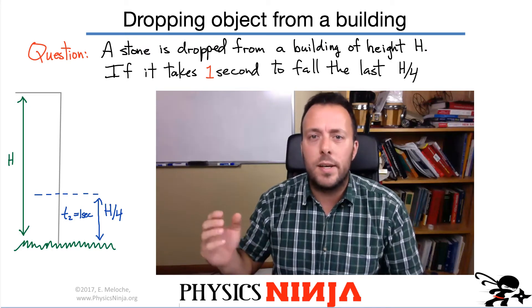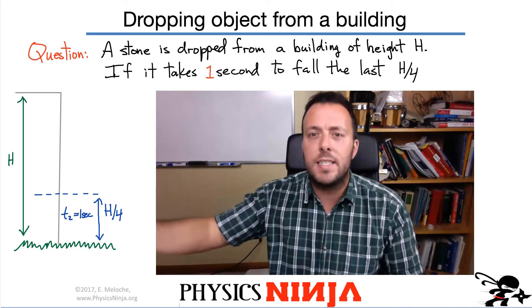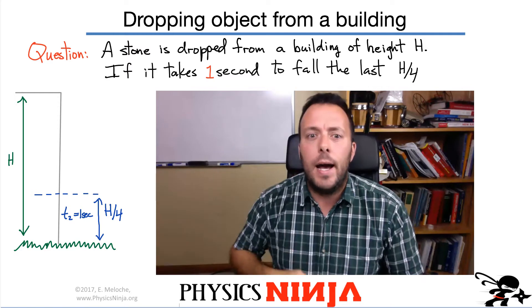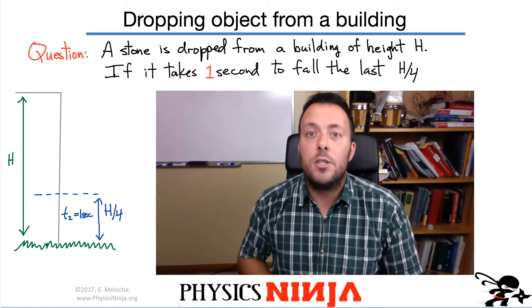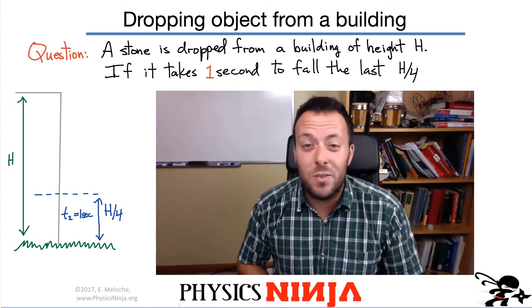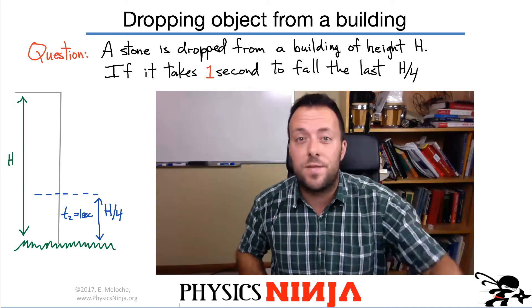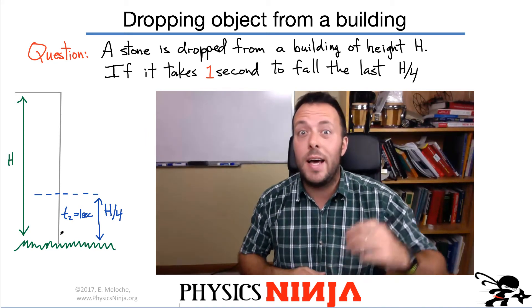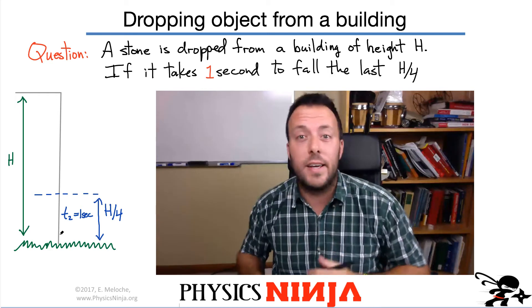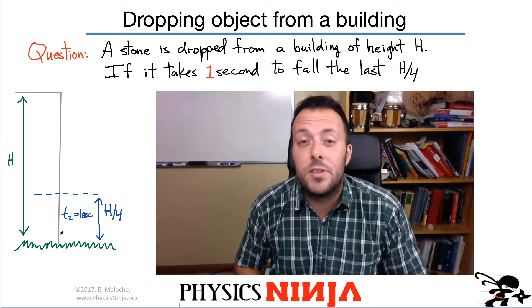So you're on top of a building and you drop a stone. The building has a height H. However, you only measure the time it takes to fall the last quarter, so the last H over 4. And it only takes one second to fall this final distance over here. So the question is, how high is the building? And what's the total time it takes for the object to hit the ground?